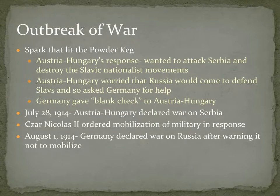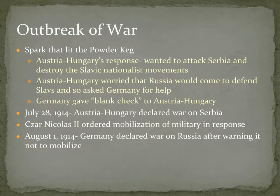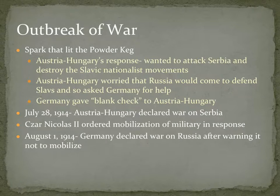Austria-Hungary had to decide how to respond to the assassination of the heir to their throne. Nobody fully knew if the Serbian government was behind it, but it was a good excuse for Austria-Hungary to try to eliminate the problem of Serbia once and for all — destroying Serbia and the Slavic nationalist movements. The only issue was Austria-Hungary's worry that Russia would come to defend the Slavic people of Serbia because of their loose alliance.